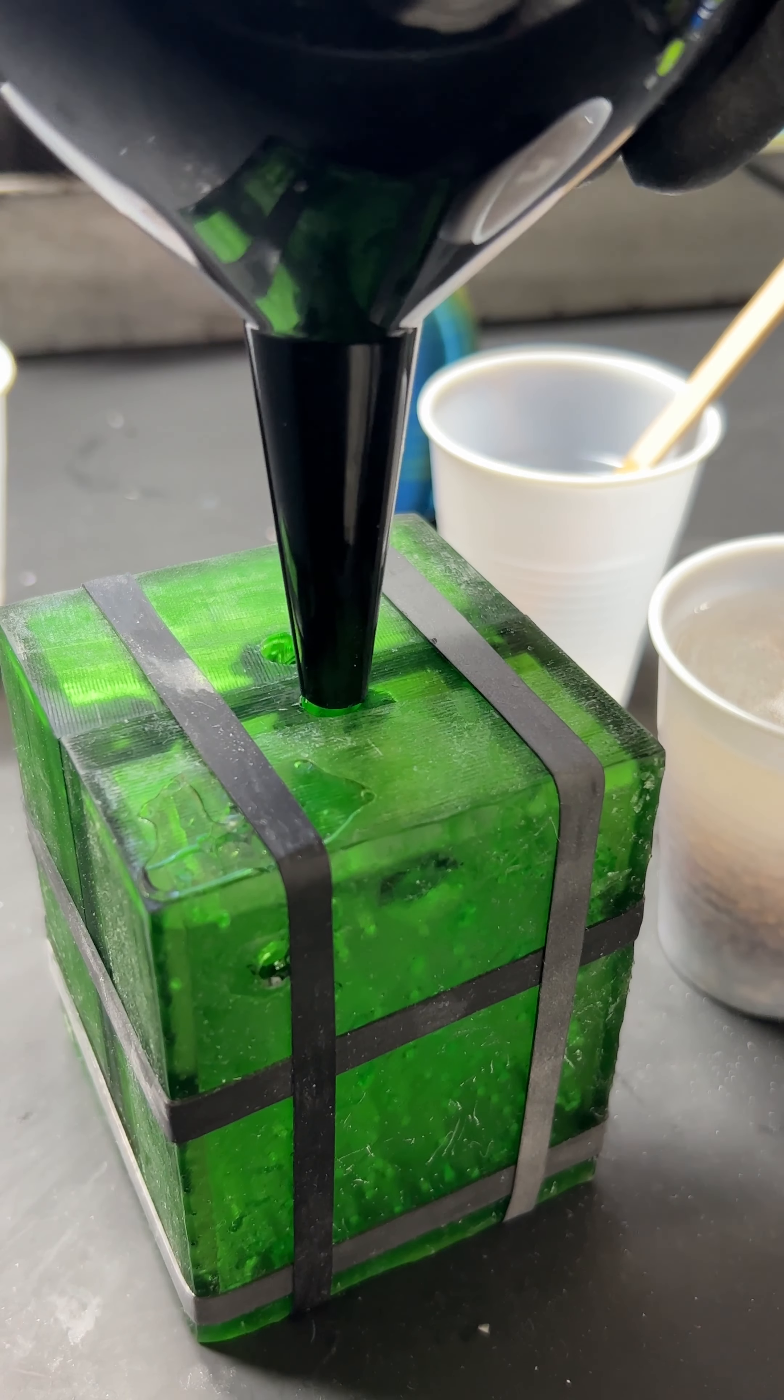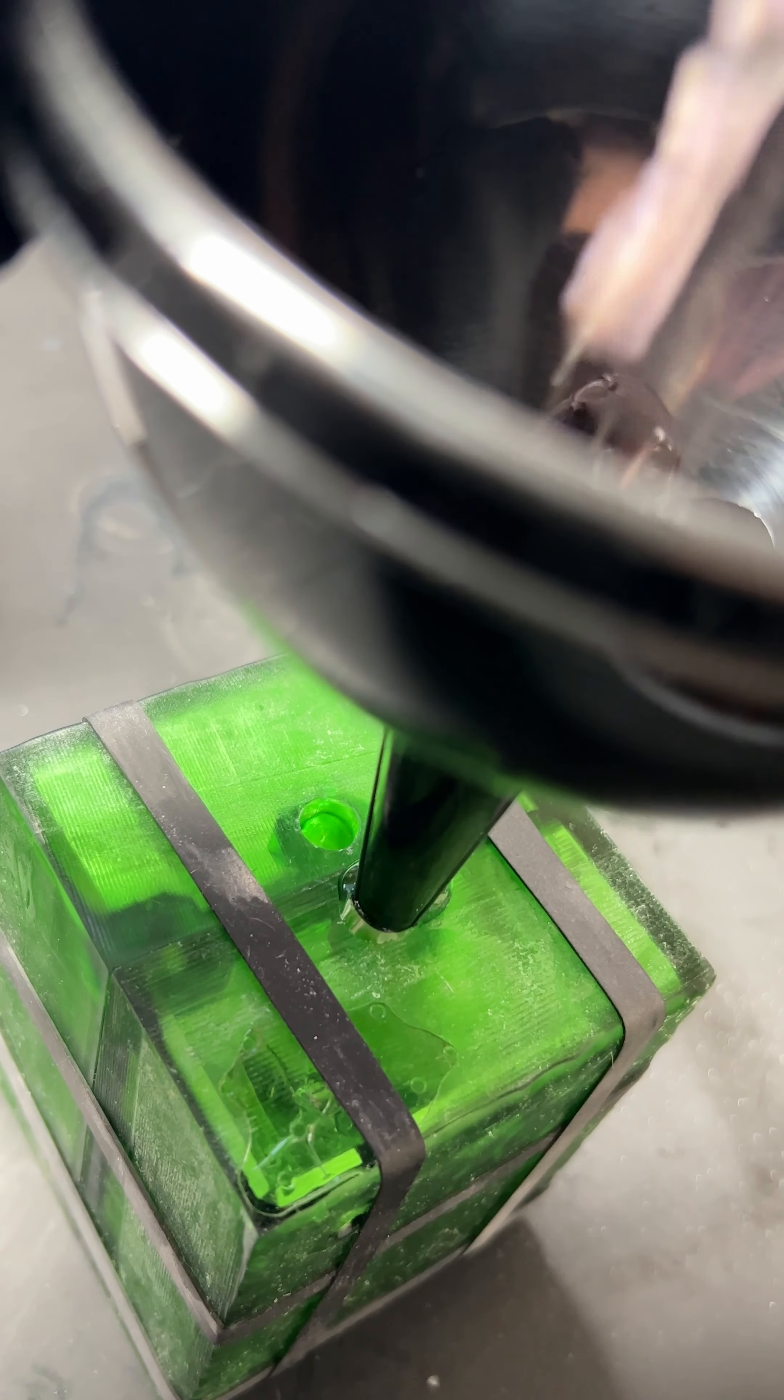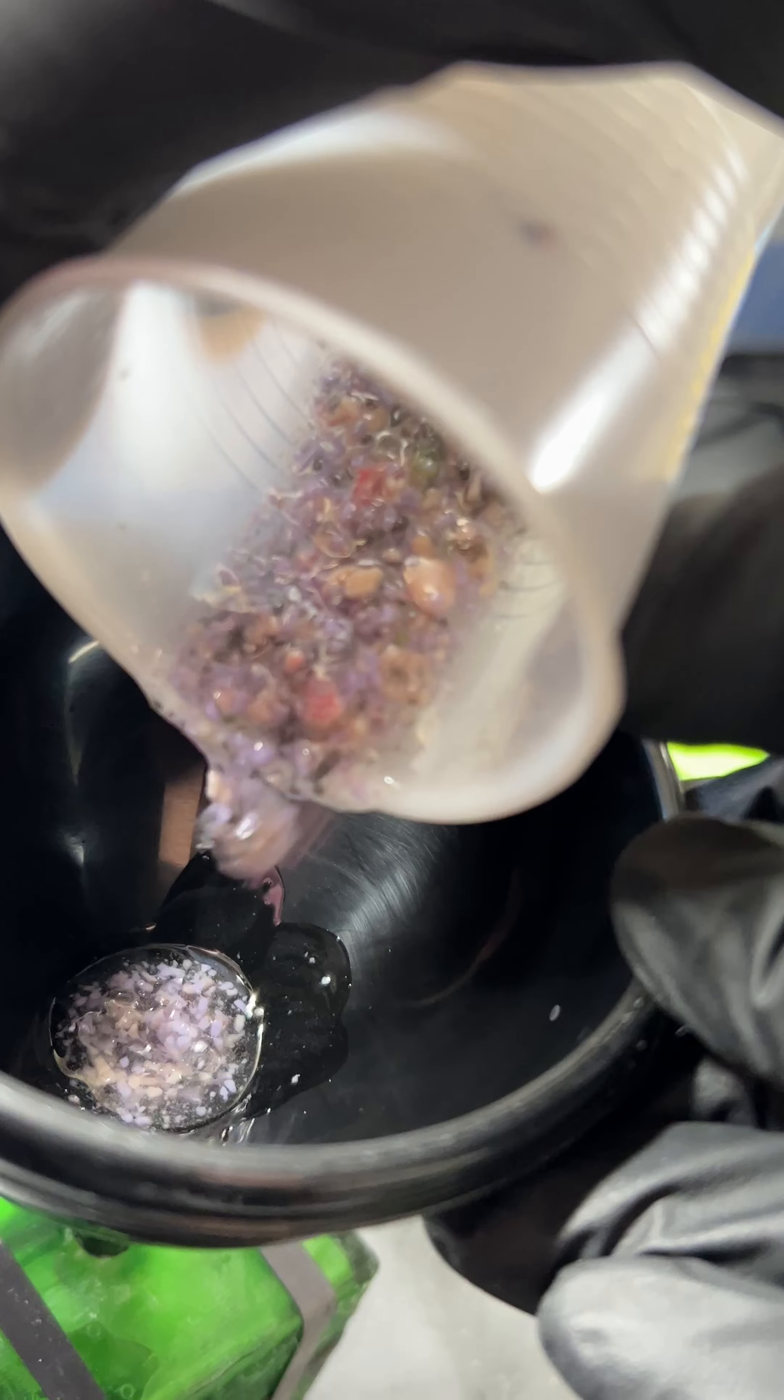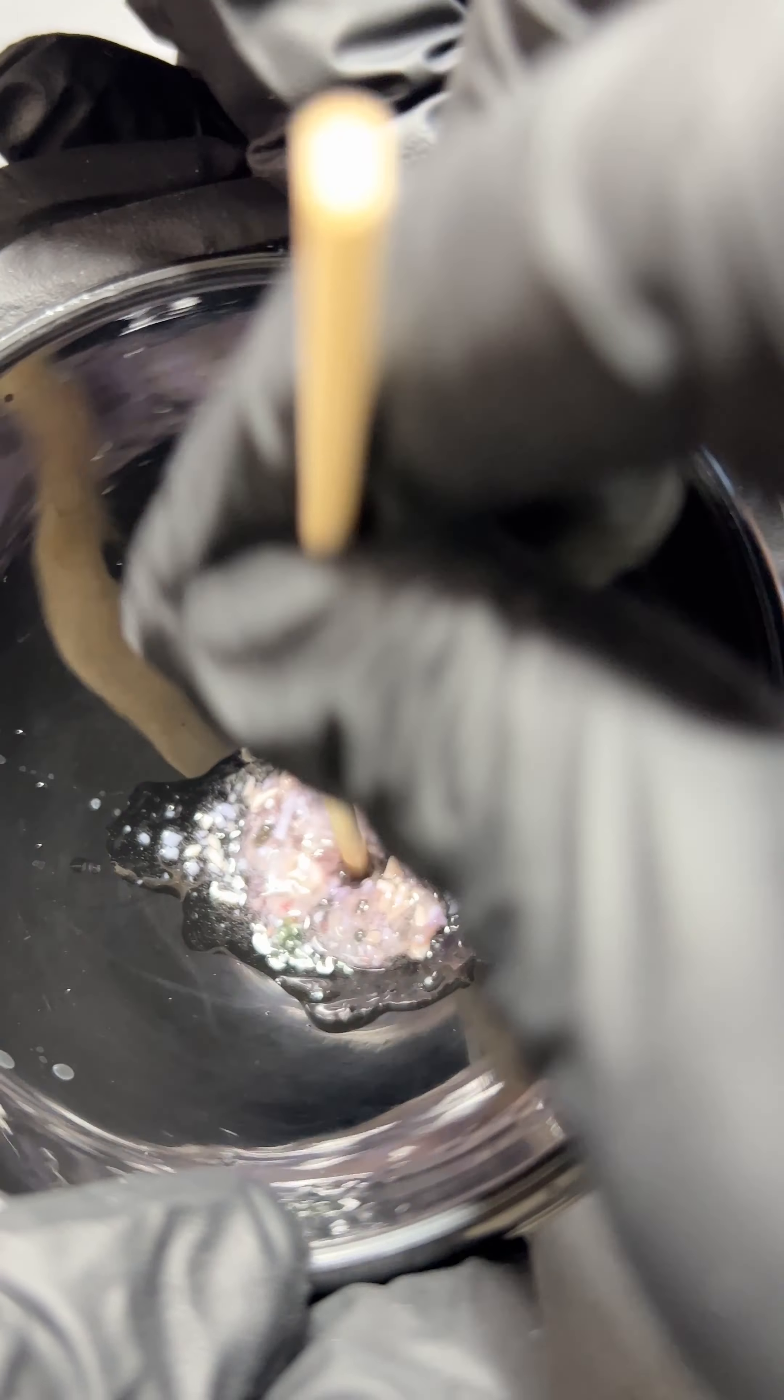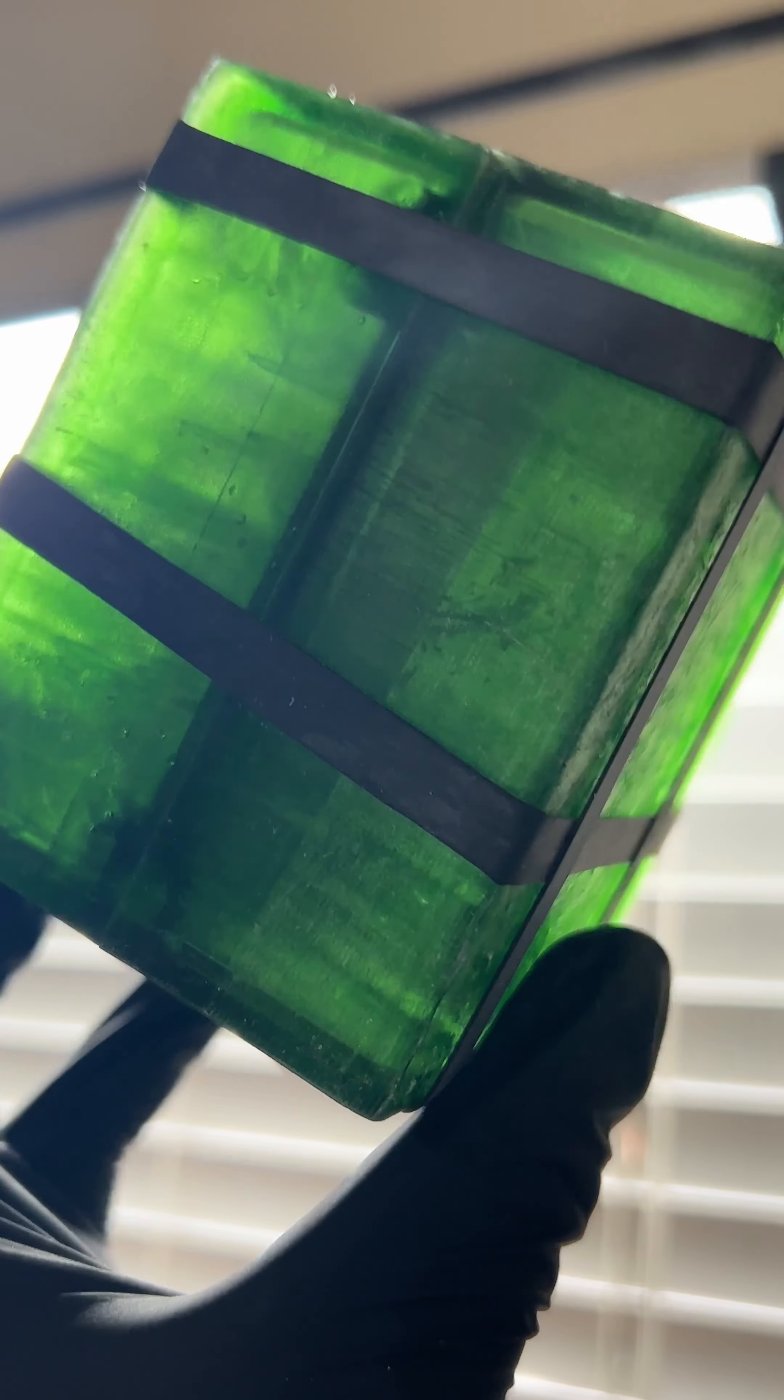The viscosity starts to thicken real fast. I use a funnel, plug it into the hole, and I give it a pour. I should have poured faster. It starts to clump up. Things started to get backed up, so I use the stick to shove everything down in there. The mold is finally filled and it takes about 20 minutes to fully harden.